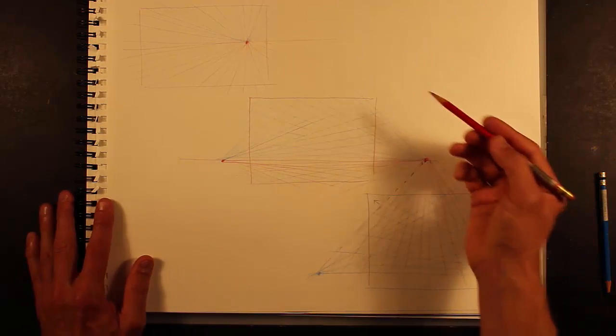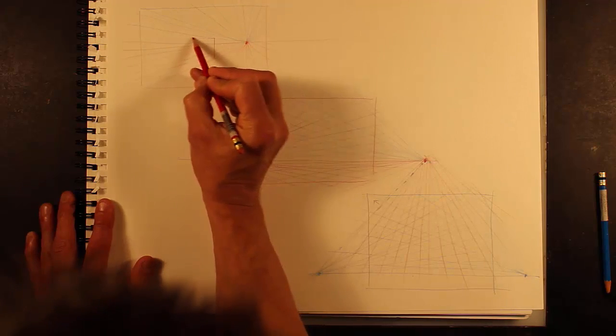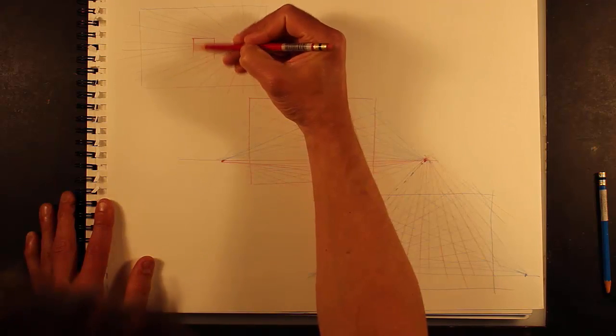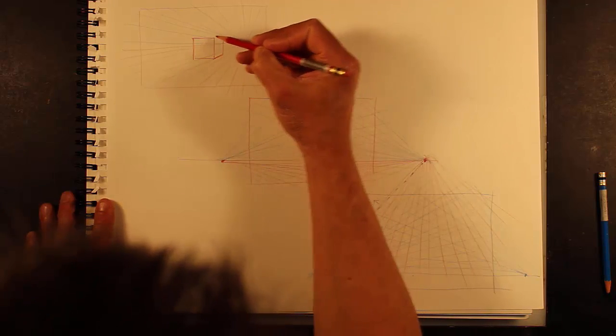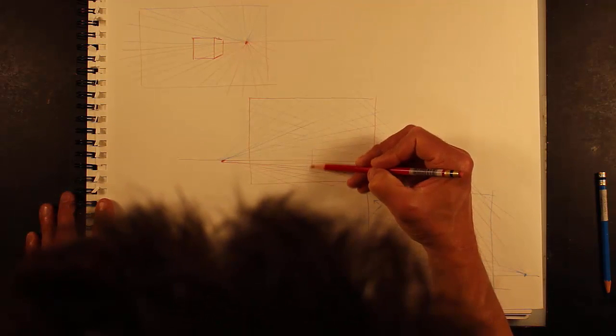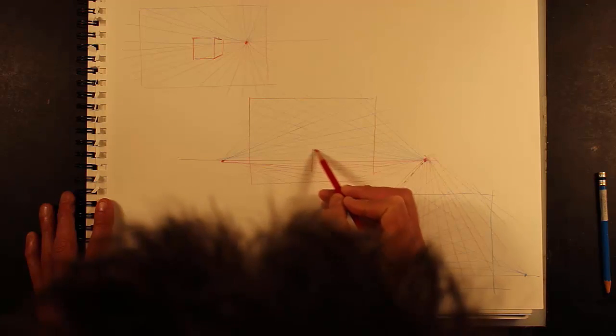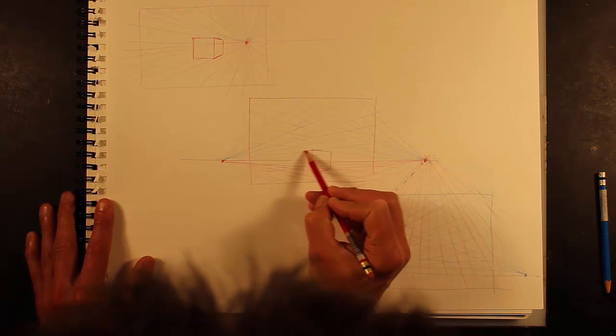So there you go. And what you do, for example, if I want to put a cube in there, my lines are already there telling me the general way that I should be going.